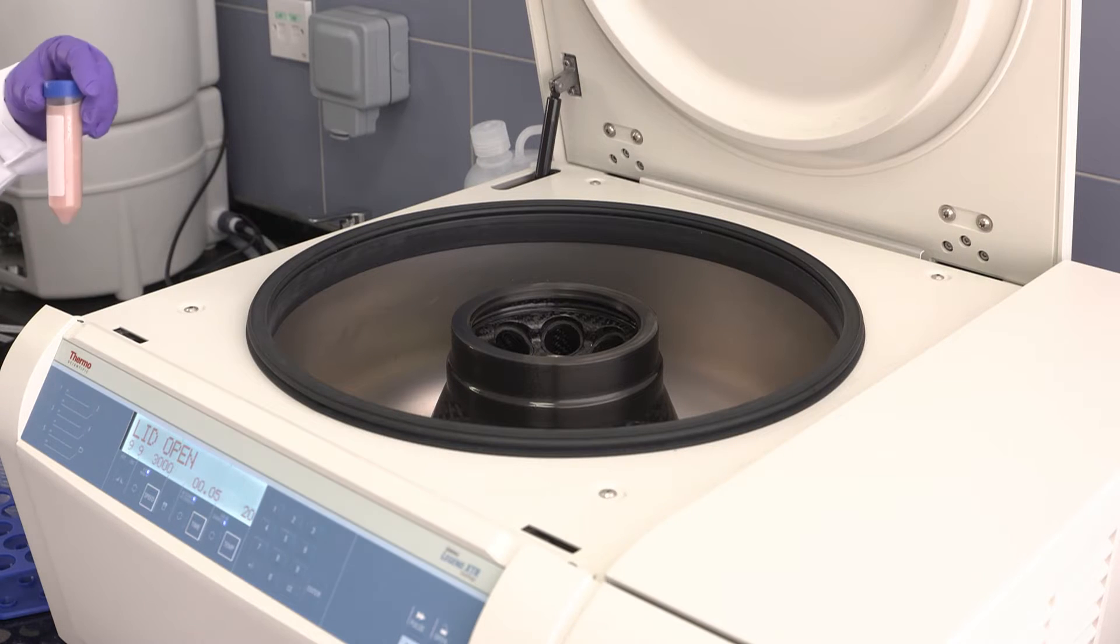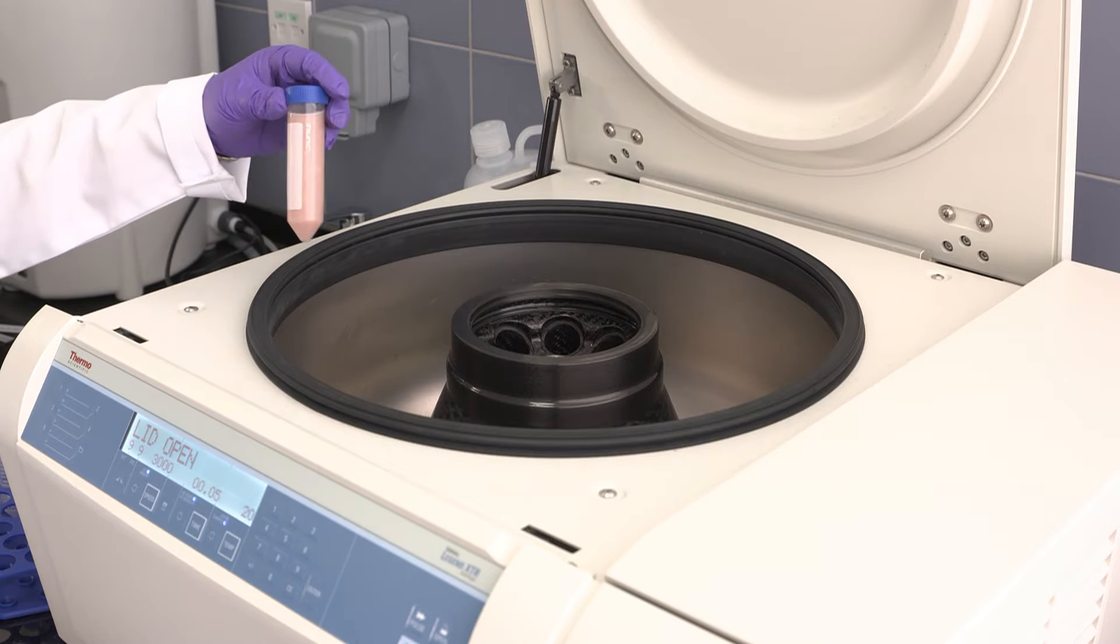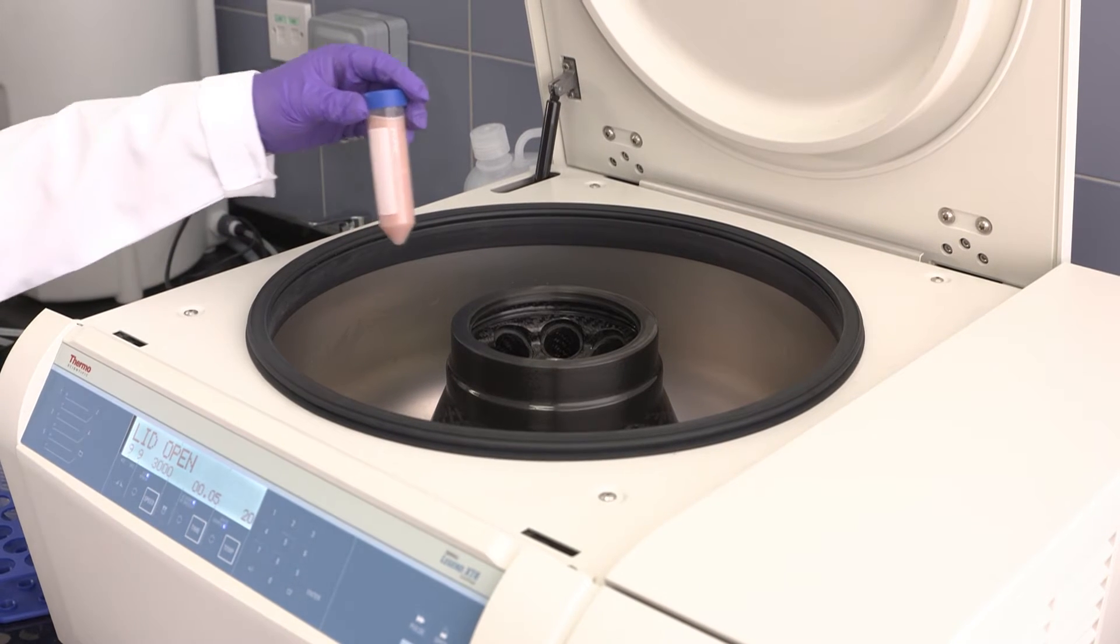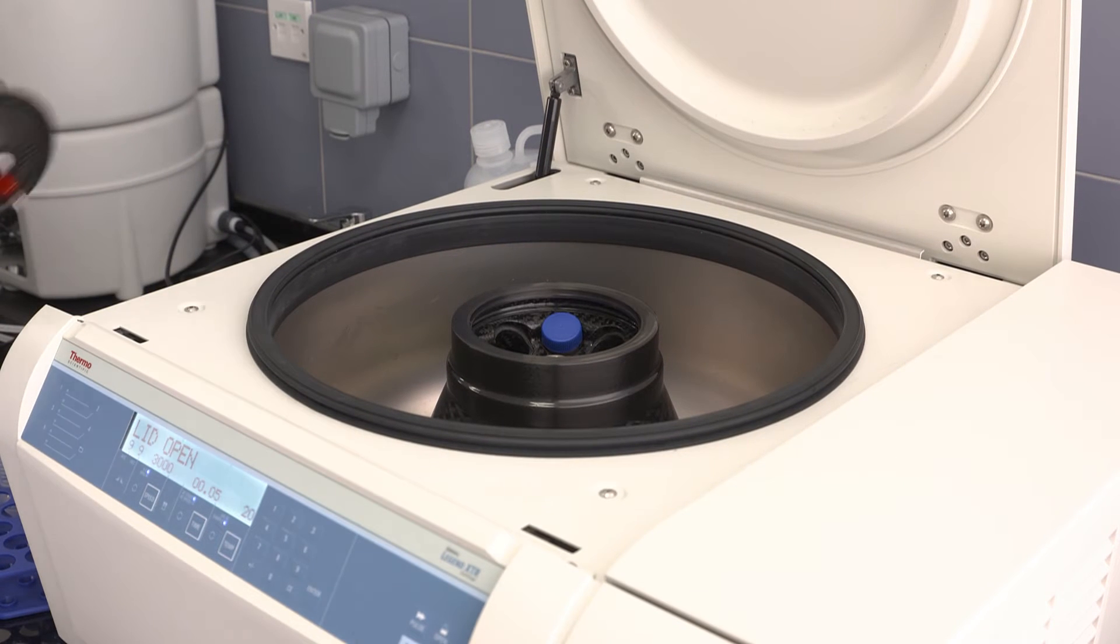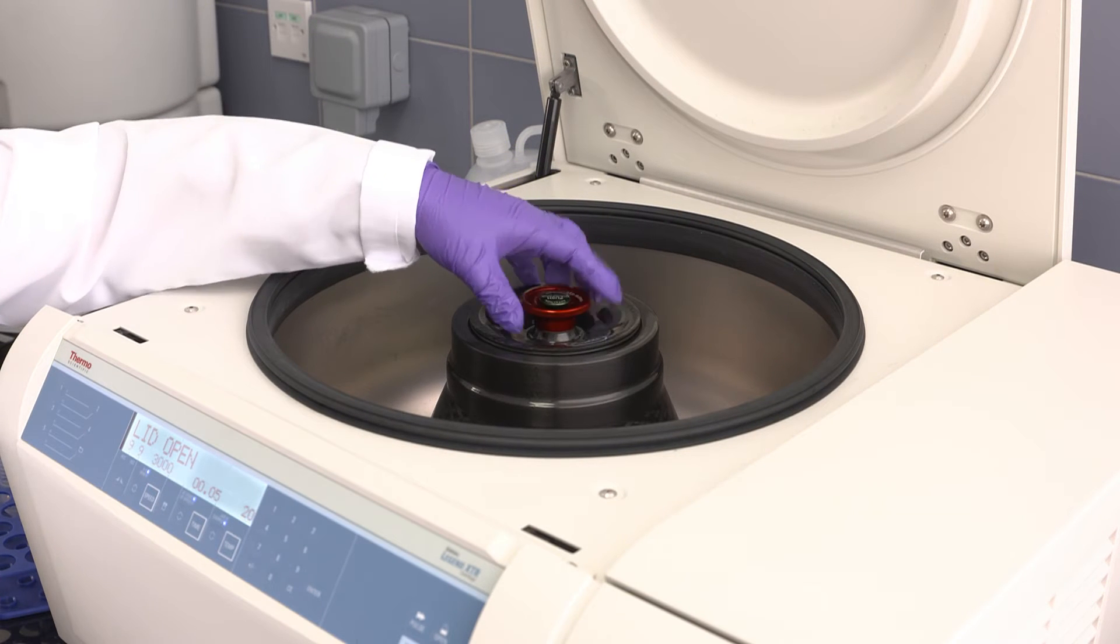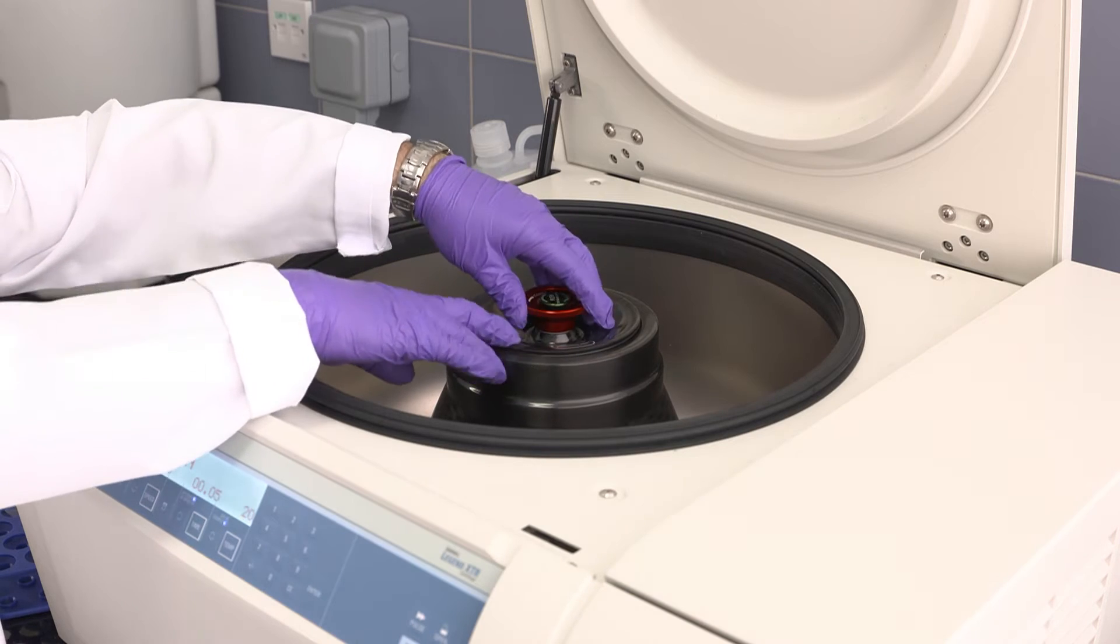We will centrifuge the mixture at 3000 g for 5 minutes. The debris will accumulate at the bottom and the side of the tube and we'll be able to use the supernatant and extract the protein.